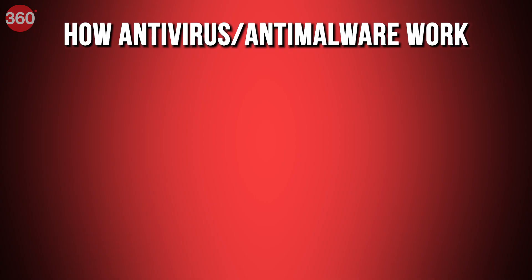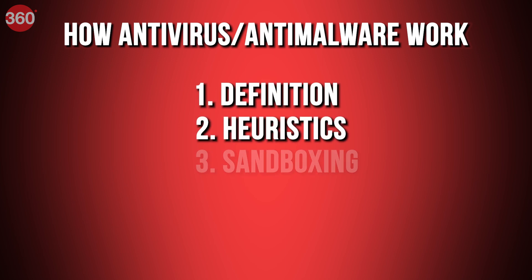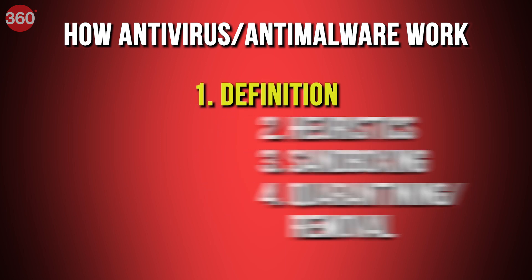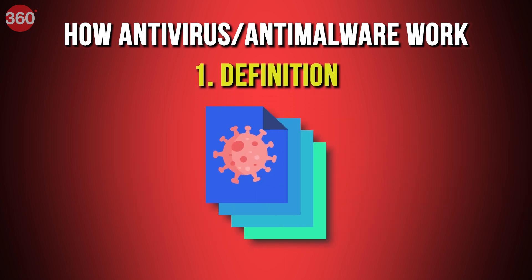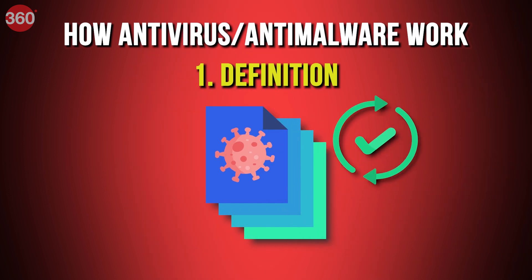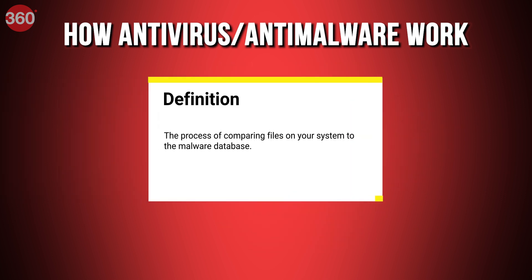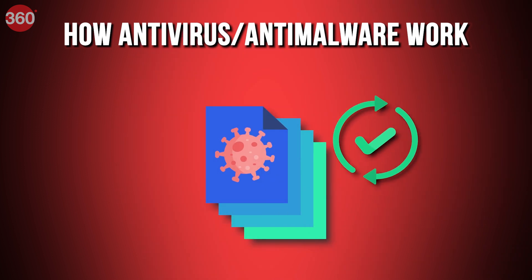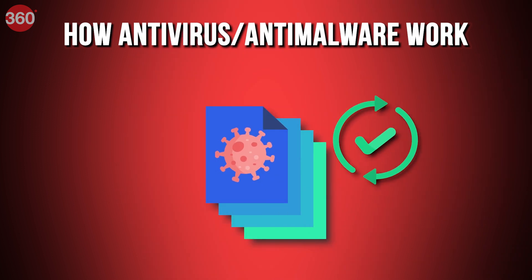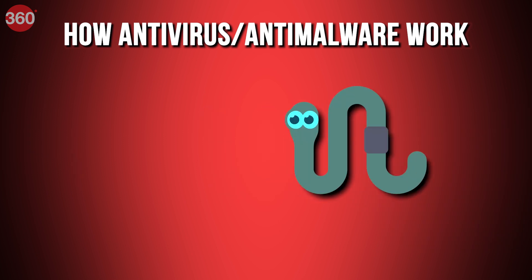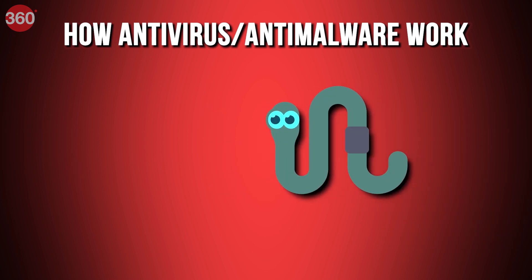These tools normally work by four processes. The first is called definition. There is a large database of malware and viruses that is constantly being updated to track the newest malware. Definition is the process of comparing files on your system to that database — bad files that match the database are defined as malware or virus. This is effective but requires the system to always be up to date, which is why it can slow down your system.